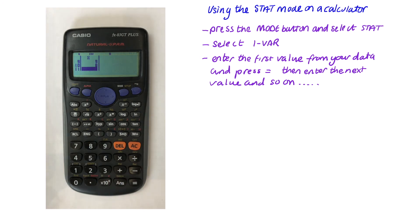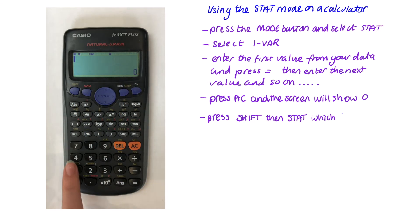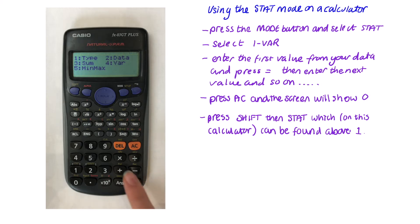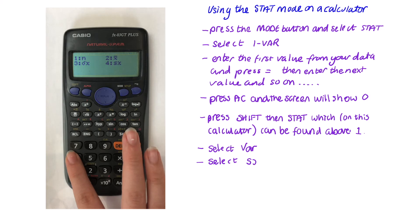It gives you an option to keep going but you press AC and the screen will show 0. Press shift. Then stat which is on this calculator can be found above the number 1. Select VAR then select SX.